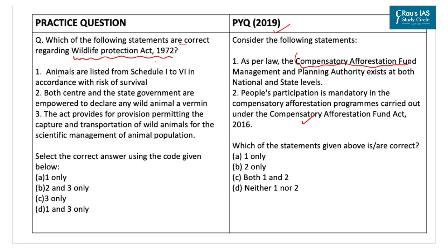The question says: Animals are listed from Schedule 1 to 6 in accordance with the risk of survival. This statement is incorrect, as animals are listed from Schedule 1 to 5. The sixth schedule was added through the Wildlife Protection Amendment Act of 1991, and it provided for inclusion of specified plant species to be protected by the Act.